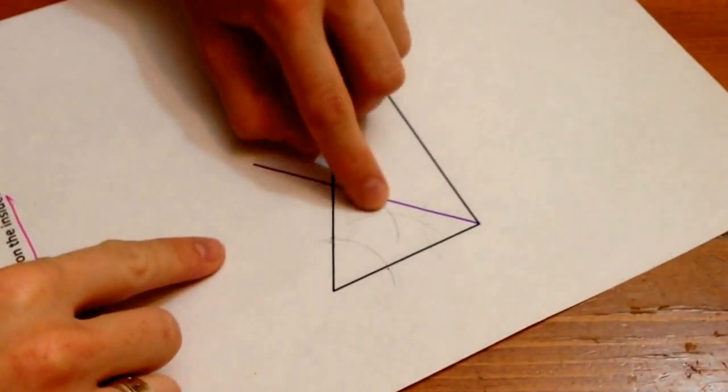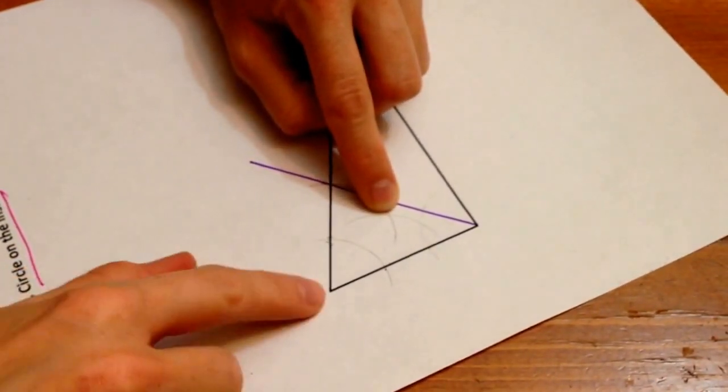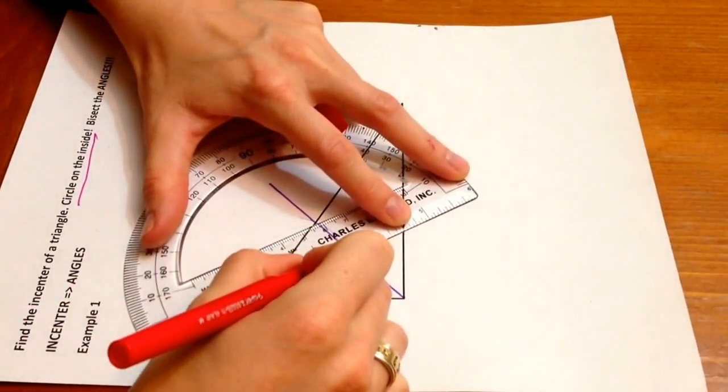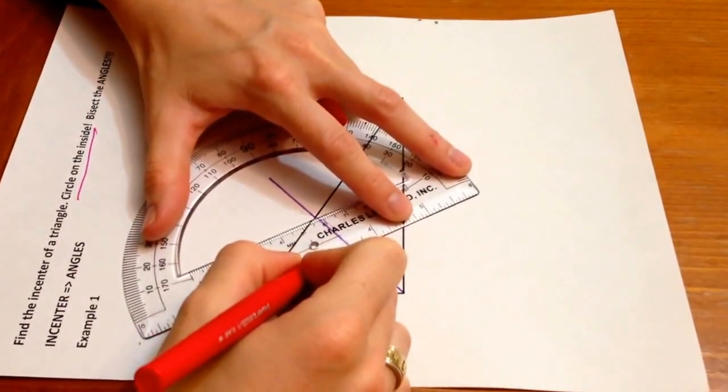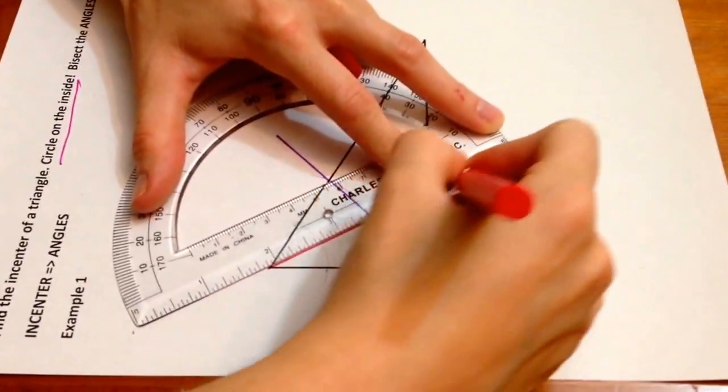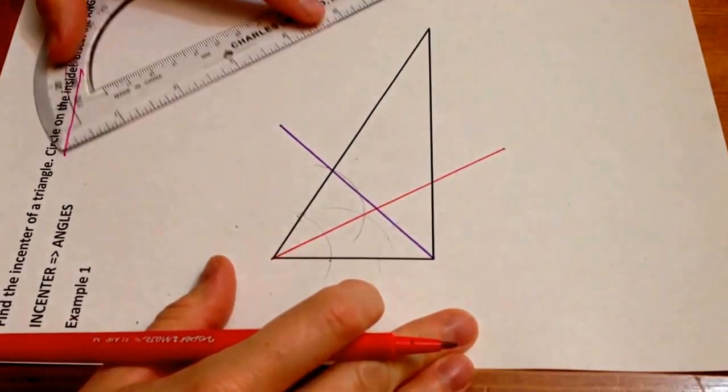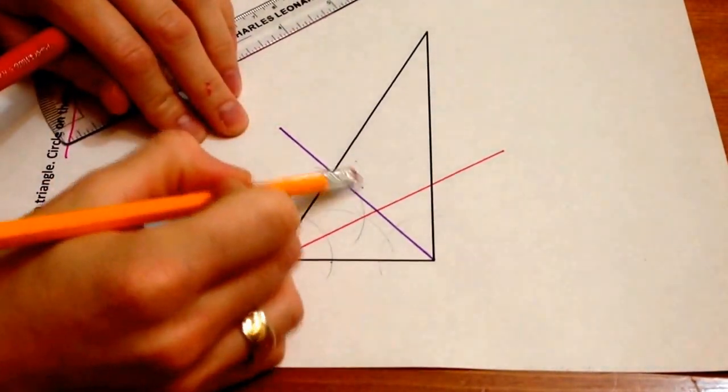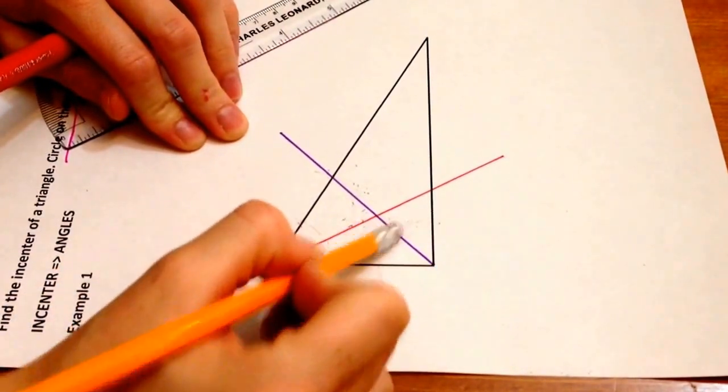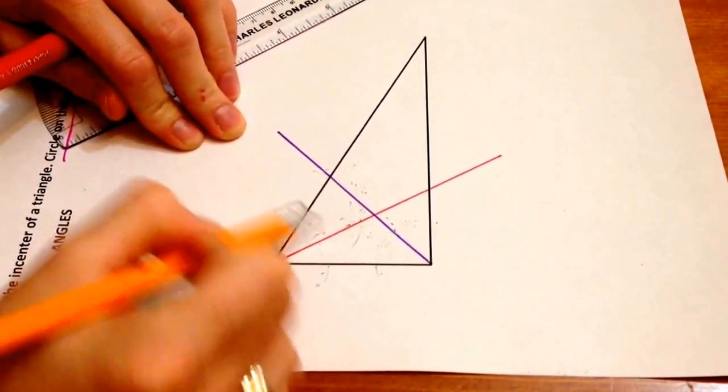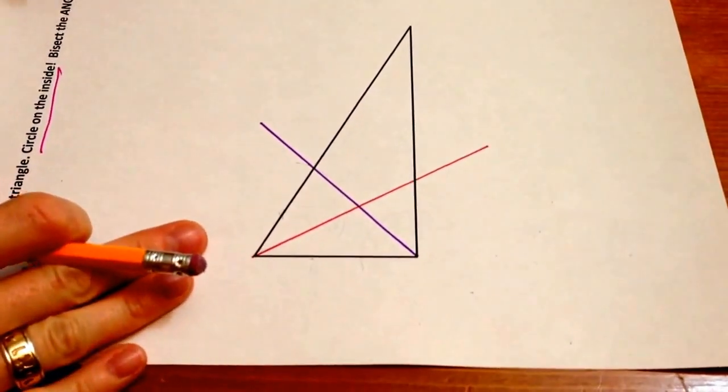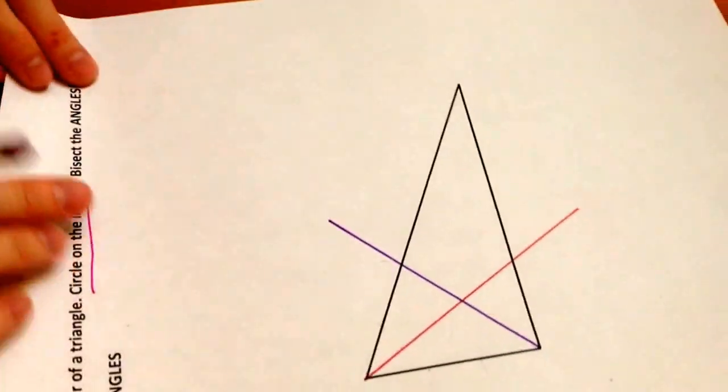And once again, where those two semicircles cross in your vertex. So where these two cross, and then where it meets up with the vertex, you're going to draw that line. And then go ahead and erase those semicircles. I don't care about those. All right. Next side.